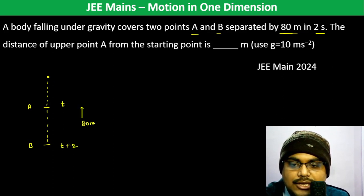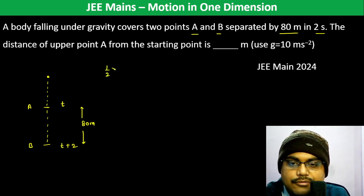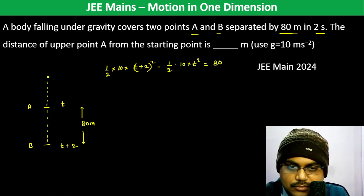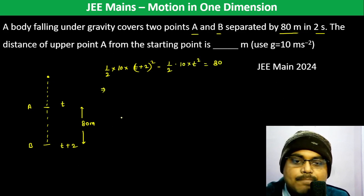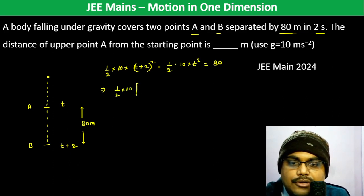The distance is 80 meters, so half into 10 into T plus 2 whole square minus half into 10 into T square equals 80. It becomes half into 10 into 4T plus 4 equals 80.